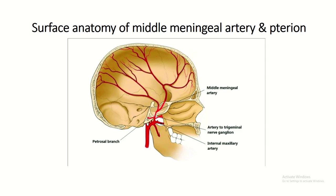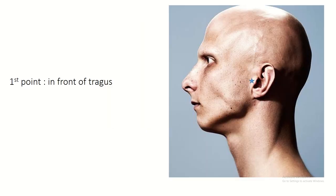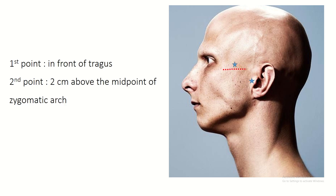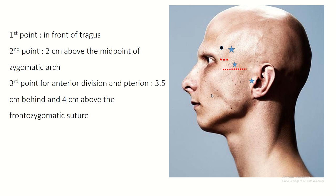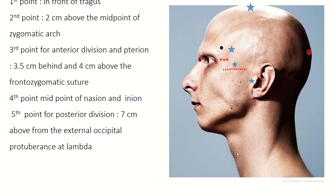Surface anatomy of the middle meningeal artery and pterion. First point: in front of the tragus. Second point: two centimeters above the midpoint of the zygomatic arch. Third point for the anterior division and pterion: three and a half centimeters behind and four centimeters above the frontozygomatic suture. Fourth point: midpoint of the nasion and inion.